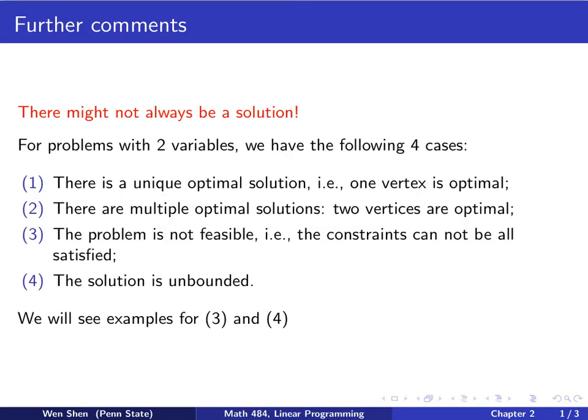If we focus our attention for problems with two variables that we have been studying, we actually will have the following four cases. Case one, there is a unique optimal solution. In this case the optimal solution is obtained at a vertex of your feasible region.